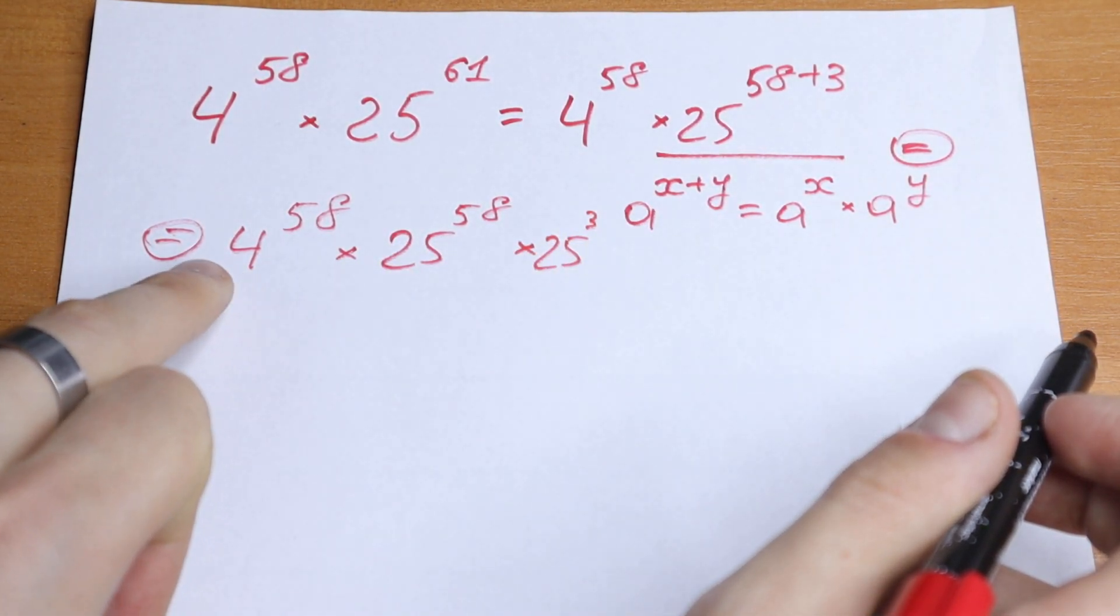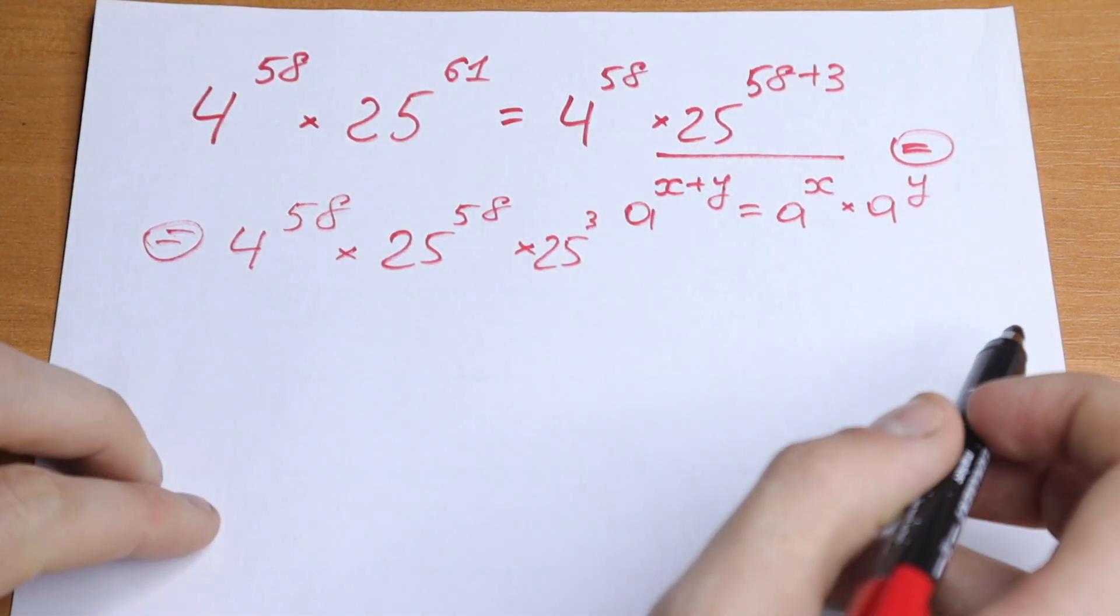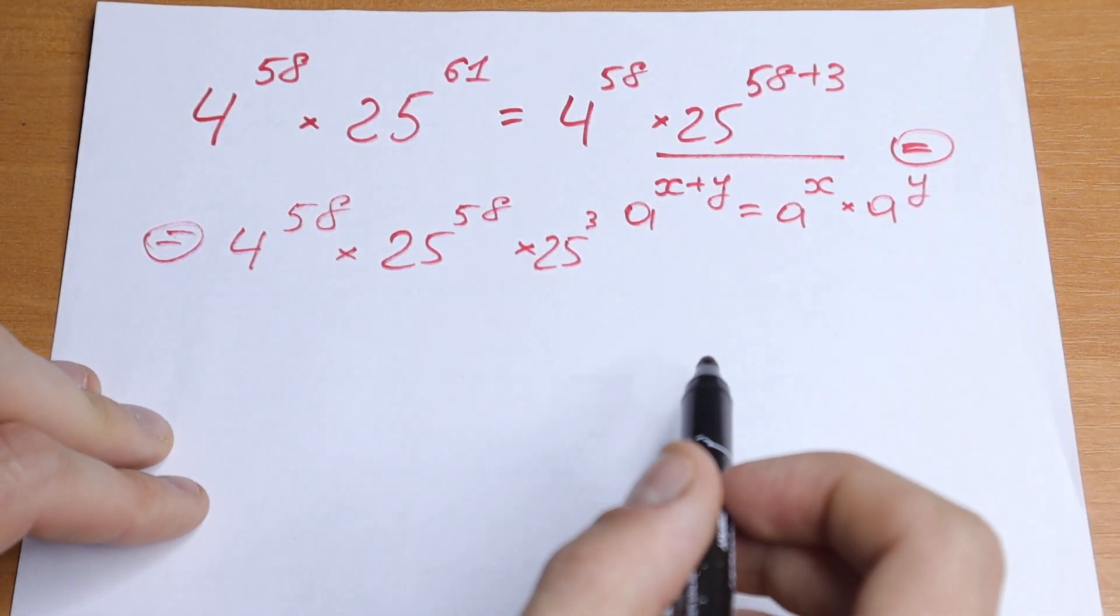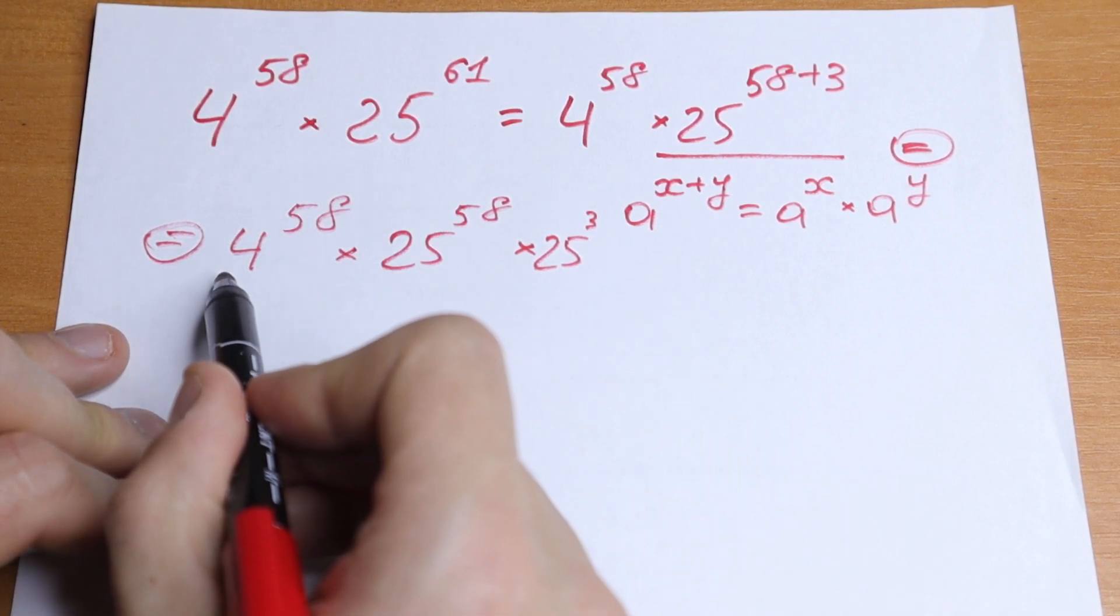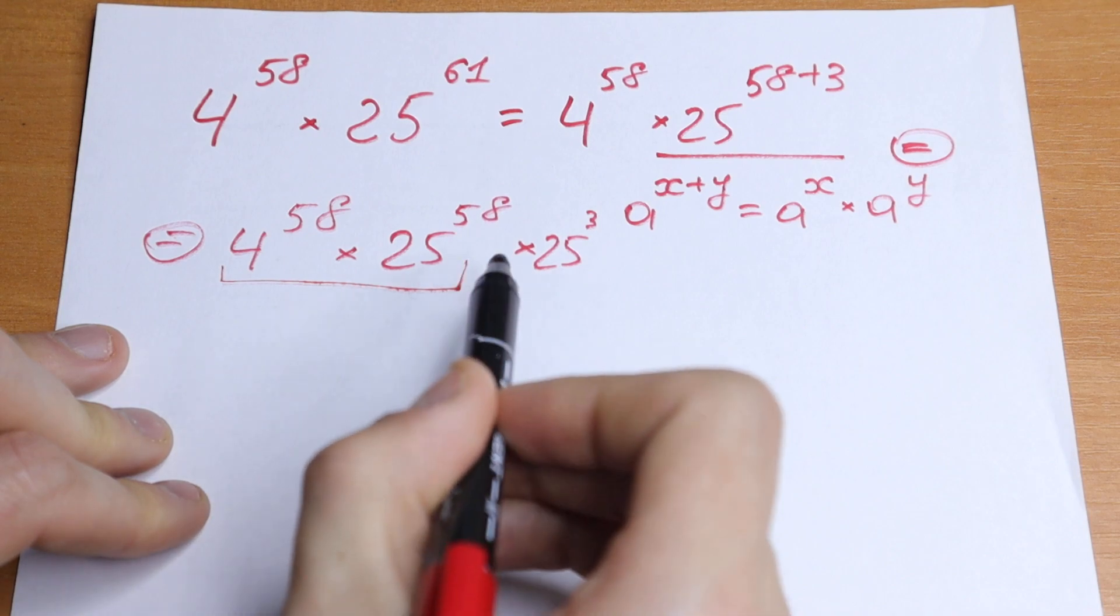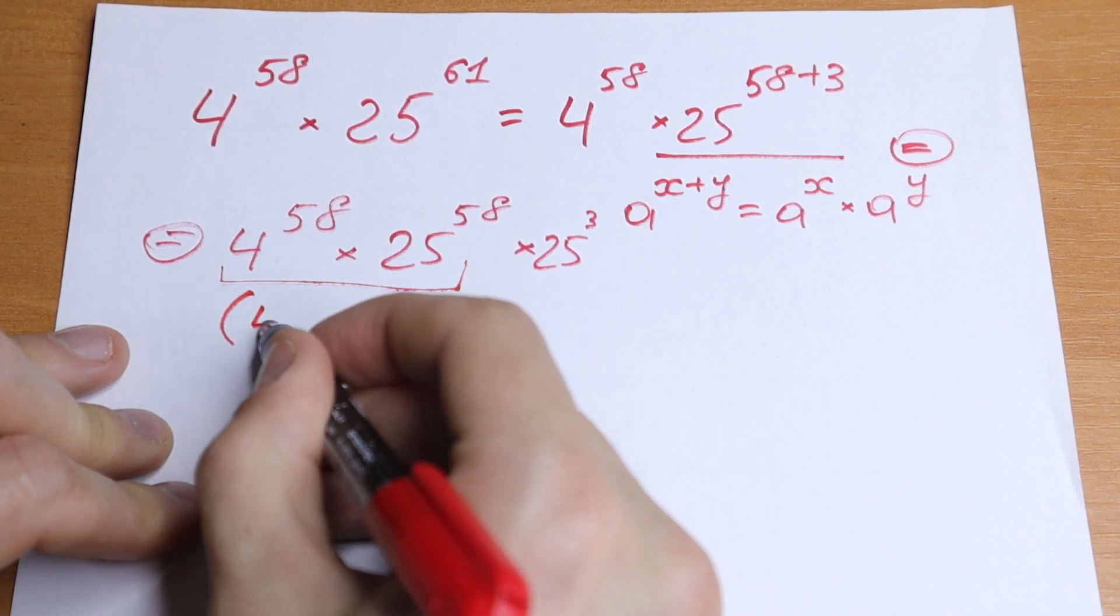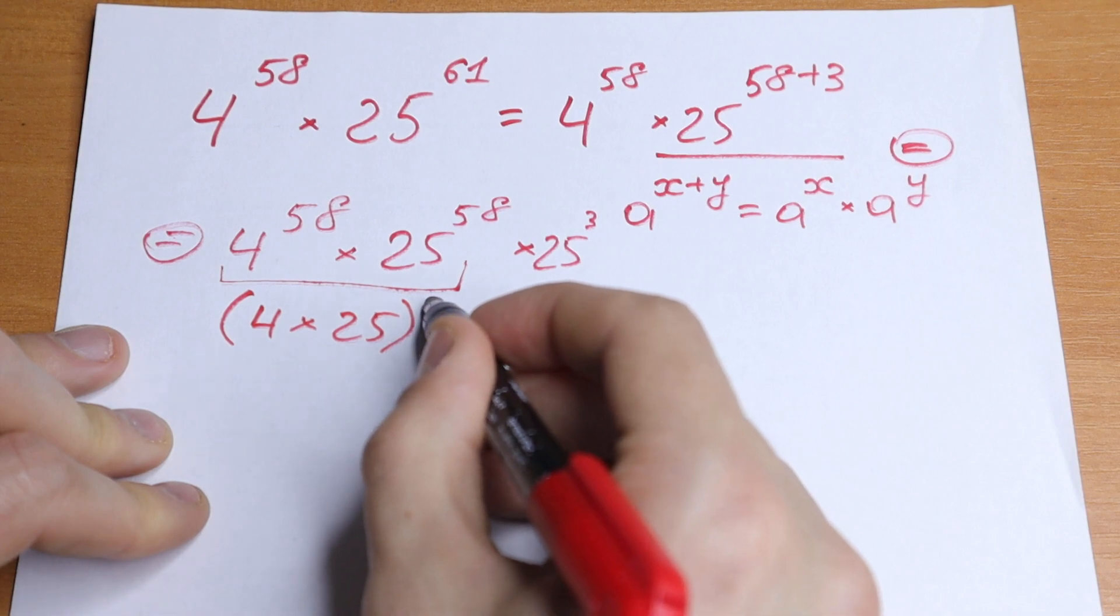So we just use this rule and separate this power. What we're going to do next? We need to know the rule, because right here we have same powers, and moreover we can write it as 4 times 25 to the power 58.